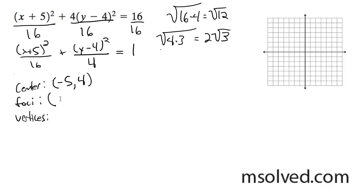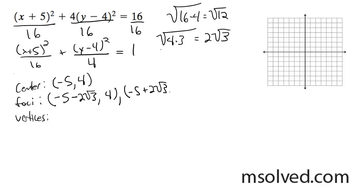So it's going to be with respect to the major axis: negative 5 minus 2 root 3, and then 4; and then negative 5 plus 2 root 3, 4.